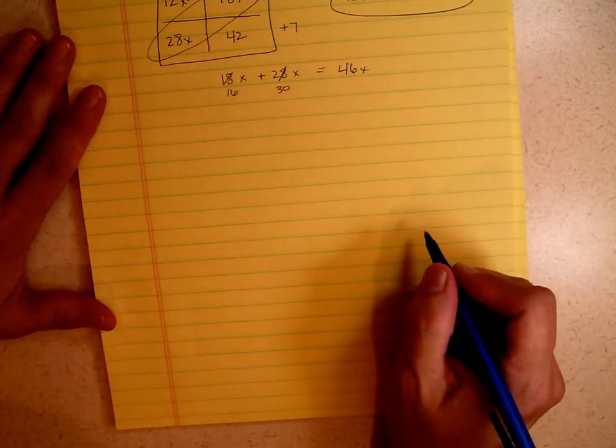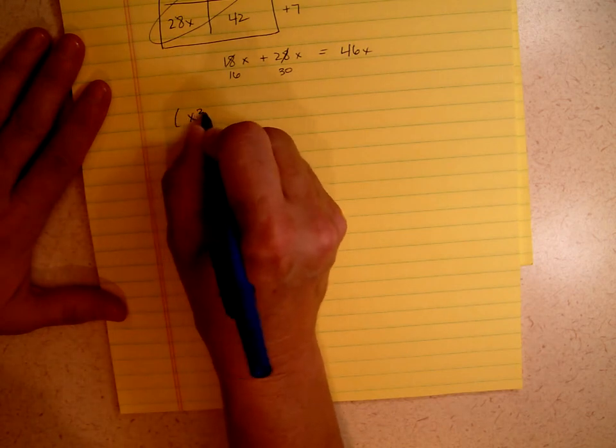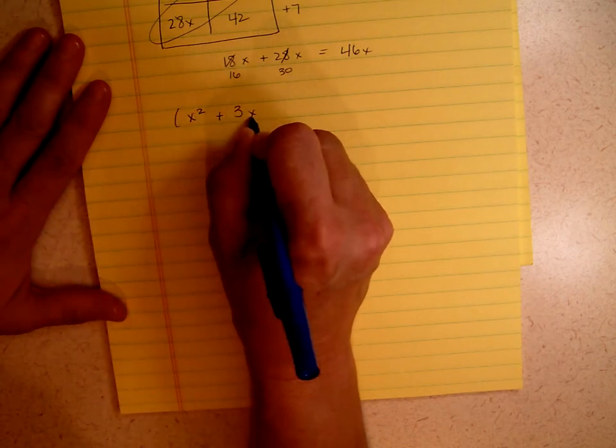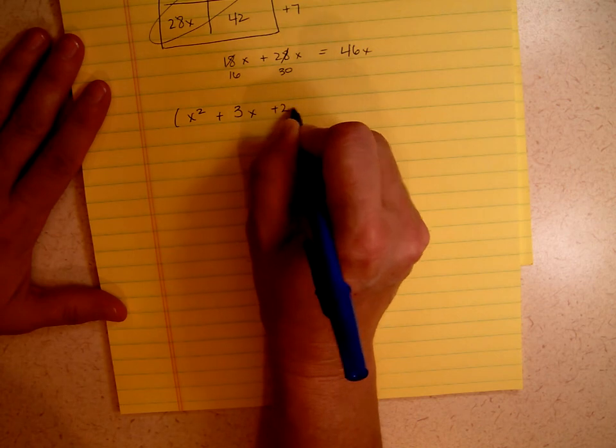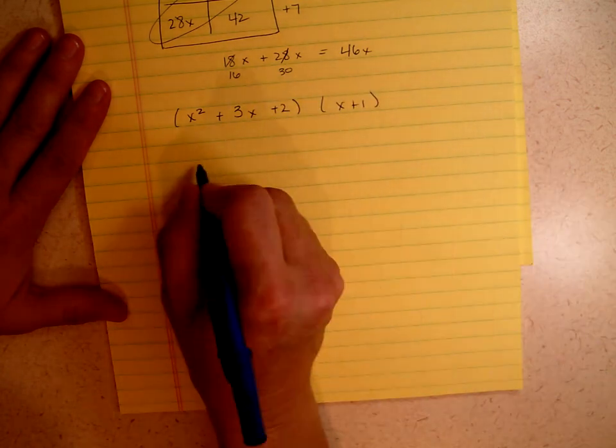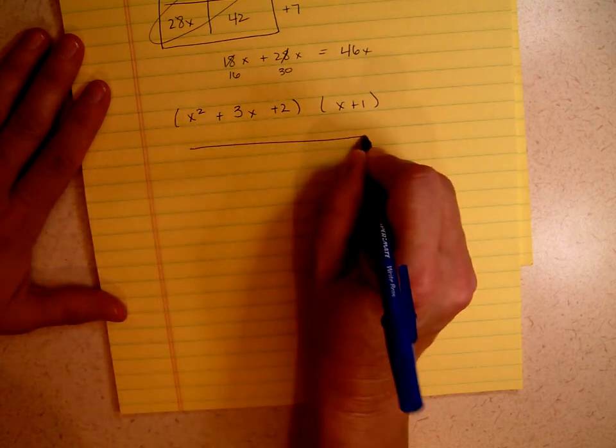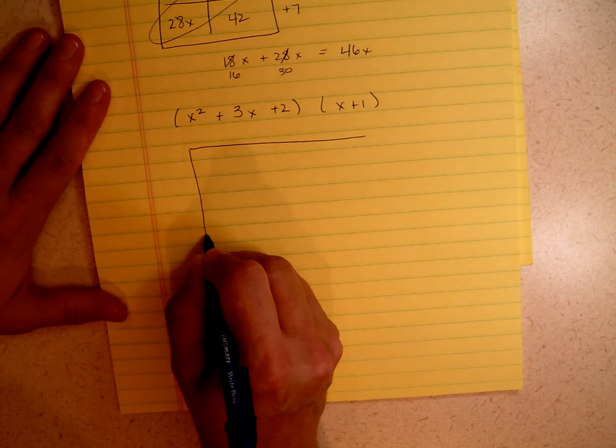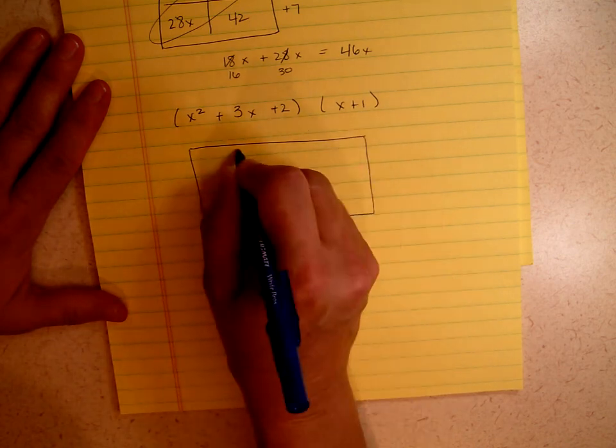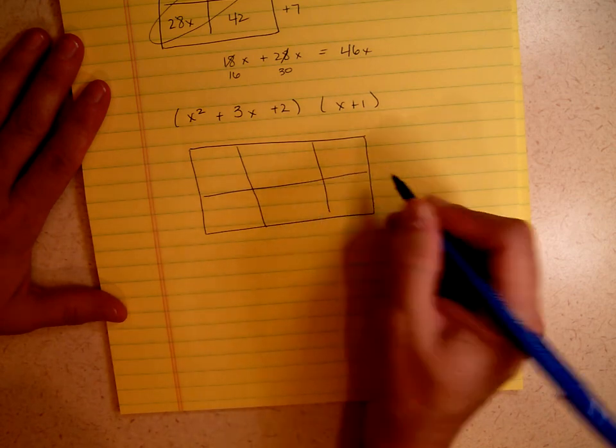The last one we're going to do on this video, we're going to do a trinomial, x squared plus 3x plus 2, and we're going to combine that, multiply that by x plus 1. Now I have 3 elements and 2 elements, so I'm going to make this 3 columns and 2 rows.